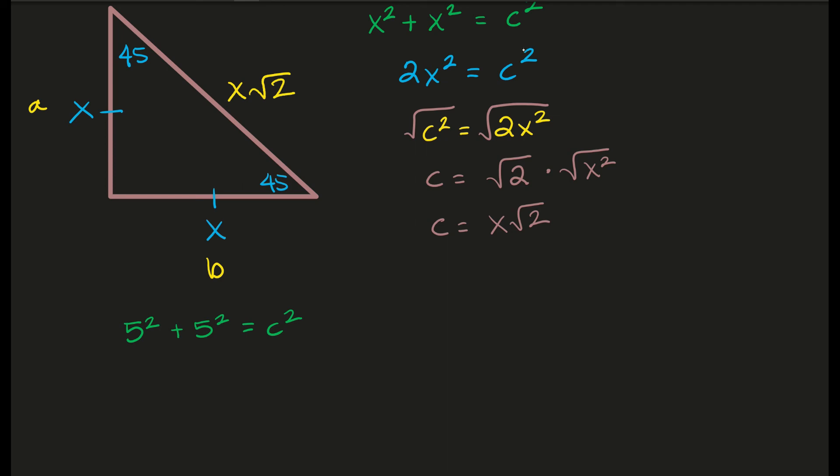Now, with the rule, we know that this should be 5, 5, and then the length here should be 5 root 2. But we can still use Pythagorean's theorem to work this out with a number, especially since we just did it with all variables. So this gives me 25 plus 25 equals c squared.